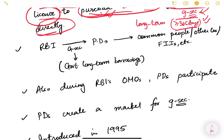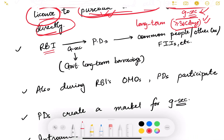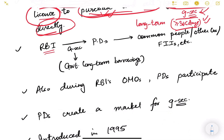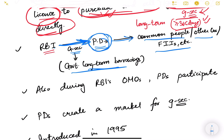The process works as follows: RBI sells government securities directly to primary dealers. Then primary dealers sell them to the common people, other companies, or foreign institutional investors. So they act as an intermediary between RBI and the market — connecting common people, other companies, other firms, and foreign institutional investors. FII and foreign direct investment we will study in detail in the next lesson.